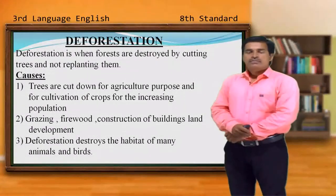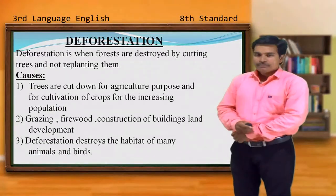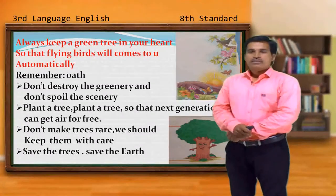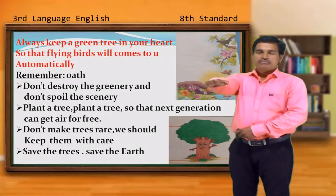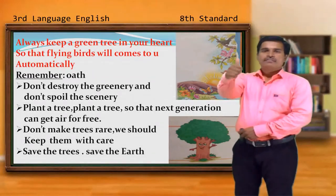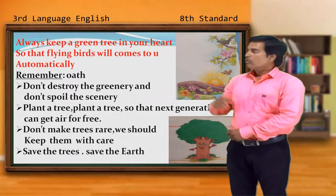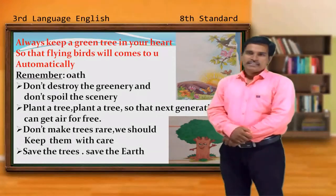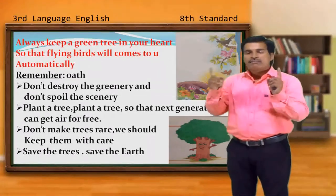What are we supposed to do now? Shall we find an answer? Let us observe this particular slide and take a promise — take an oath. I request you to stand up and stretch your arm. We, the younger generation, have to make a promise. Repeat after me: always keep a green tree in your heart so that the flying birds will come to you automatically. When you have a green tree in your heart, you won't have nasty thoughts, and everything will be green and pleasant.